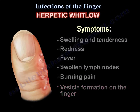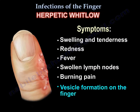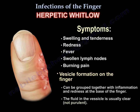Symptoms of herpetic whitlow include swelling and tenderness, redness, fever, and swollen lymph nodes. There is burning pain and vesicles on the finger, which can be grouped together with inflammation and redness at the base of the finger. The fluid in the vesicles is usually clear, not purulent.